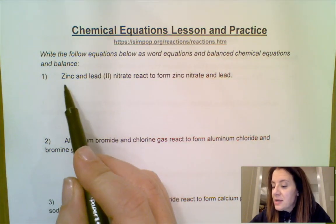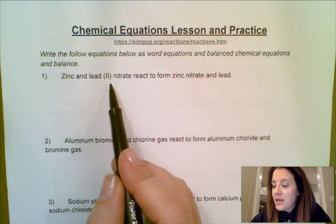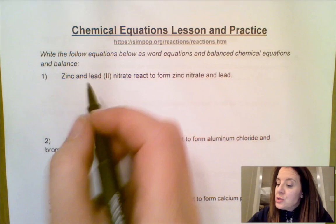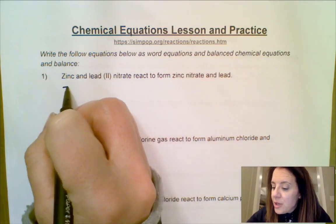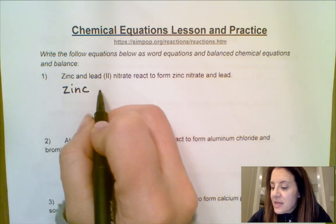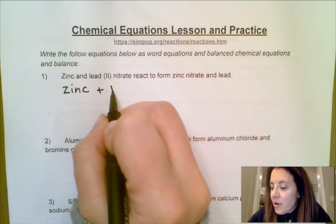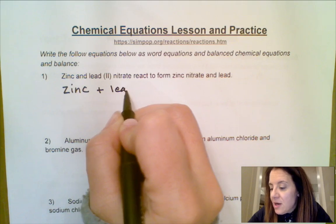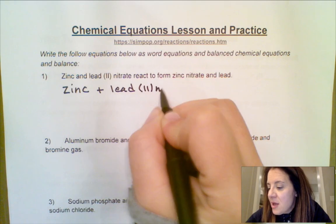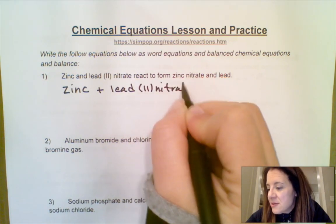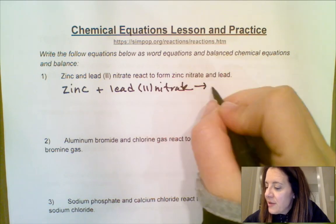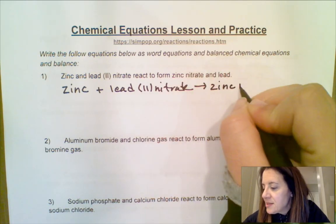Here it tells us that zinc and lead(II) nitrate react to form zinc nitrate and lead. I'm going to write the word equation first. I always put the reactants on the left and the products on the right hand side, separating the reactants with plus and doing the same thing with the products. If we're forming something, then that has to be on the right hand side.